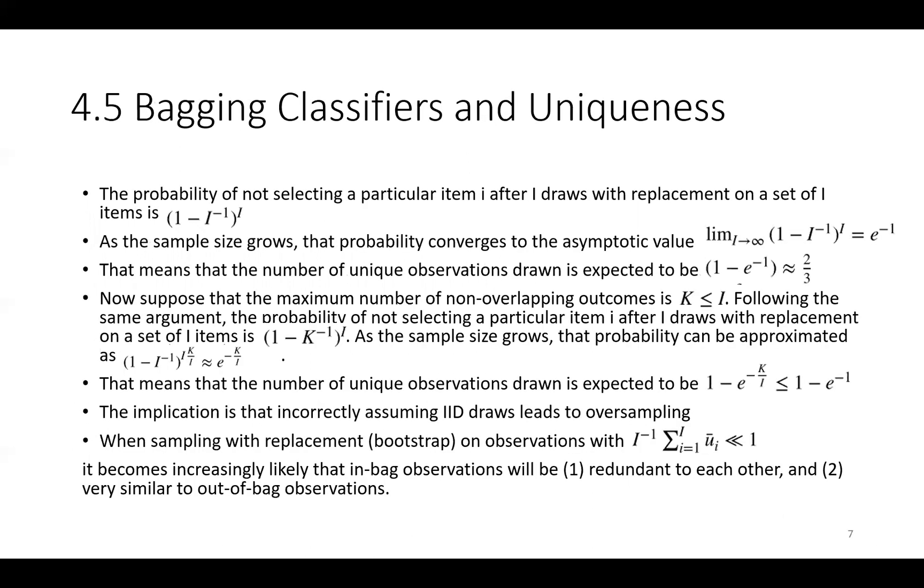Let's move to bagging classifiers and uniqueness. The probability of not selecting a particular item i after I draws with replacement on a set of I items is (1 - 1/I)^I. As the sample size grows, that probability converges to the asymptotic value of e^(-1). That means that the number of unique observations drawn is expected to be 66%.